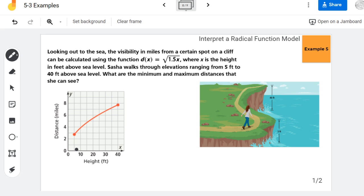So her minimum distance out to sea that she'll be able to see is at her minimum height. Right? Because the lower you are to the ground, the less range you have for seeing.